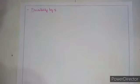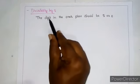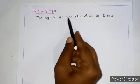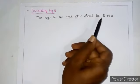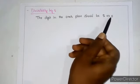Students, now we are going to know divisibility by 5. The digit in the 1's place should be 5 or 0.